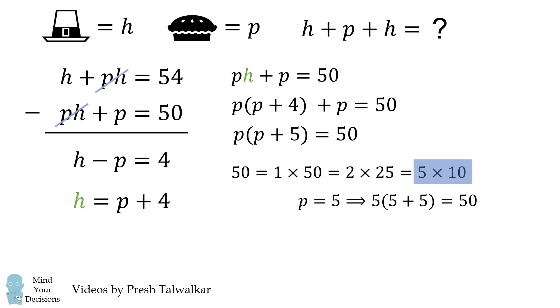We're not done yet, because we don't just want to consider the positive factors. In this case, we could also have two negative factors being equal to 50. So it could be negative 1 times negative 50, negative 2 times negative 25, and negative 5 times negative 10.